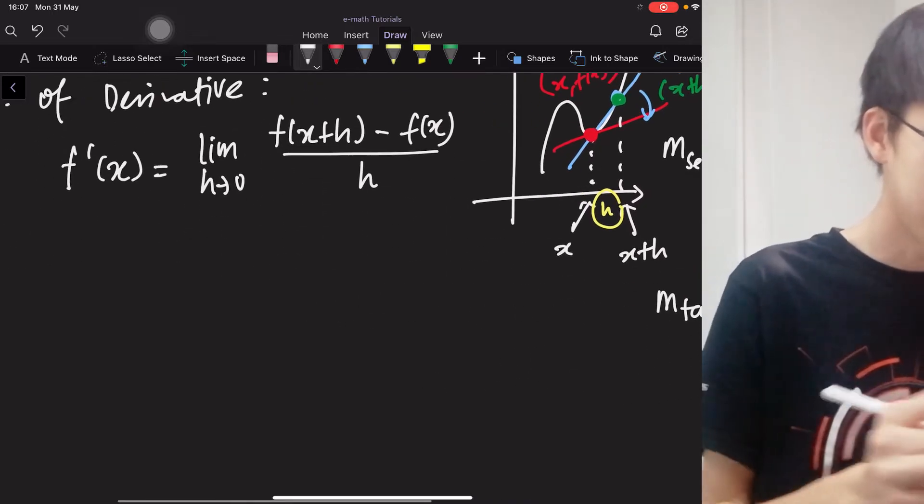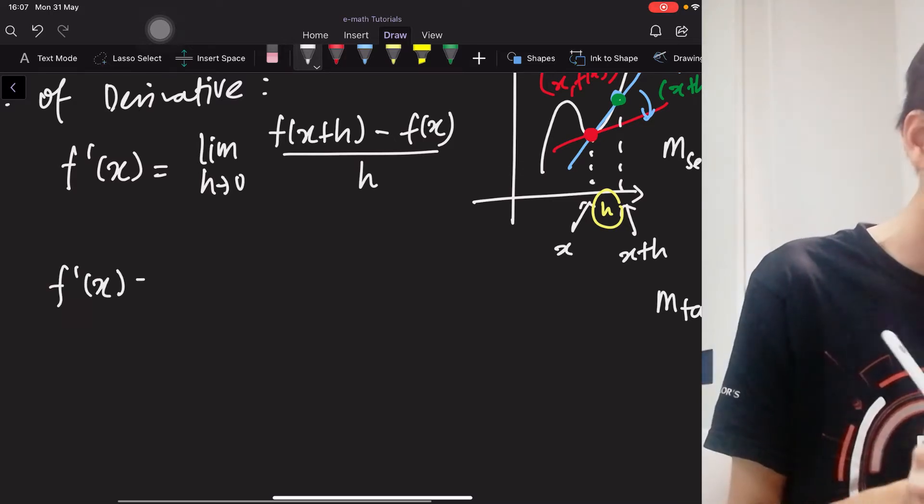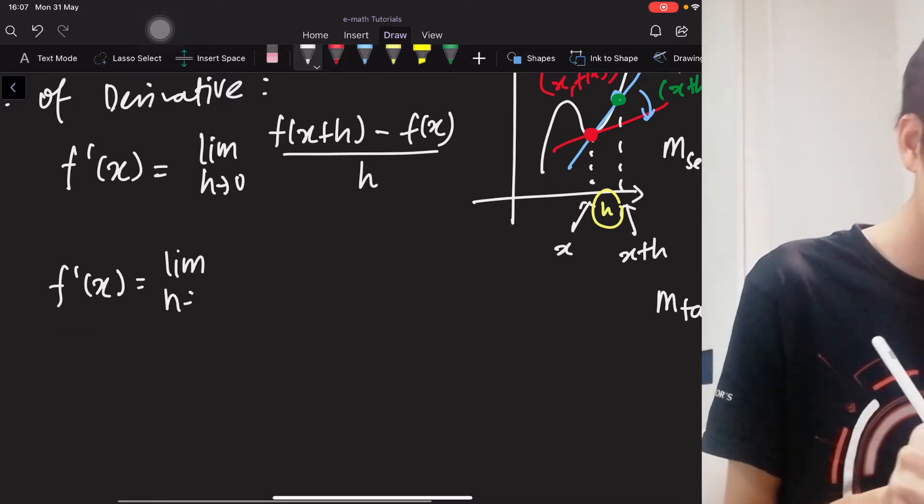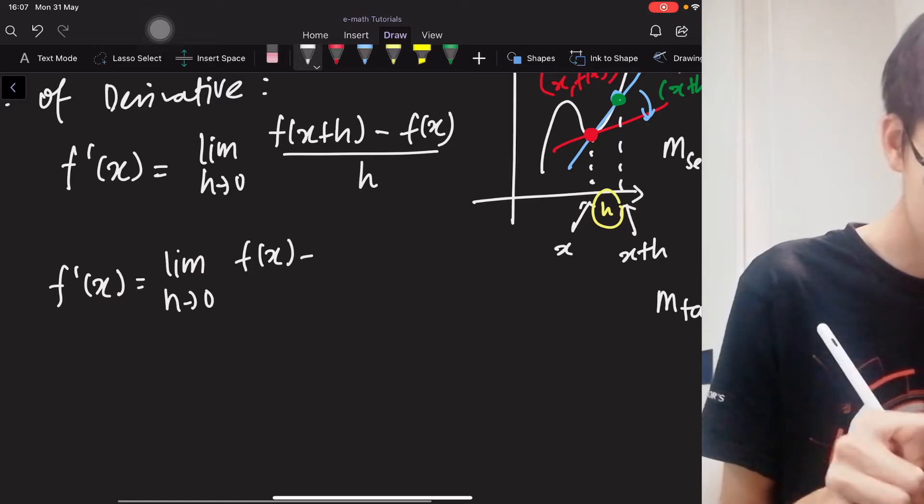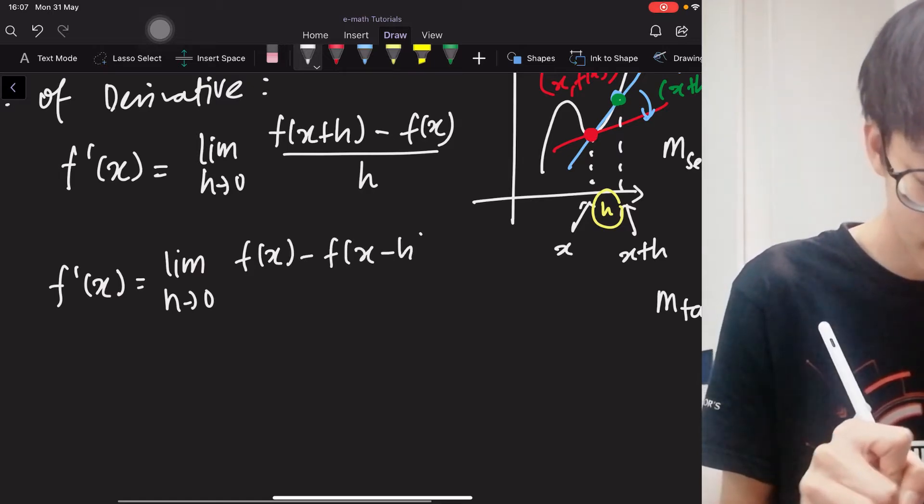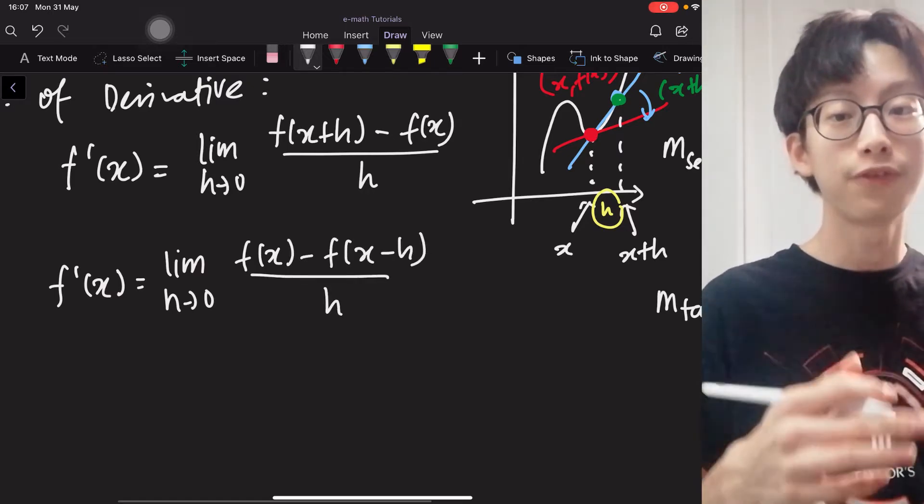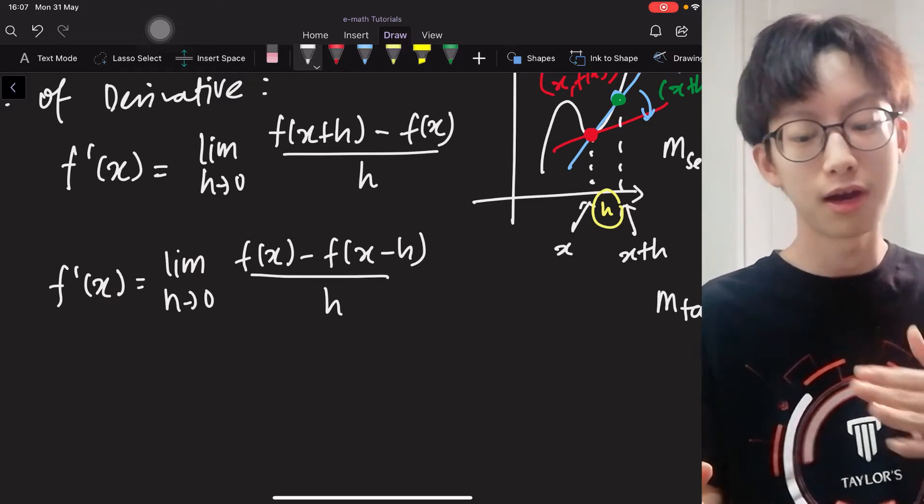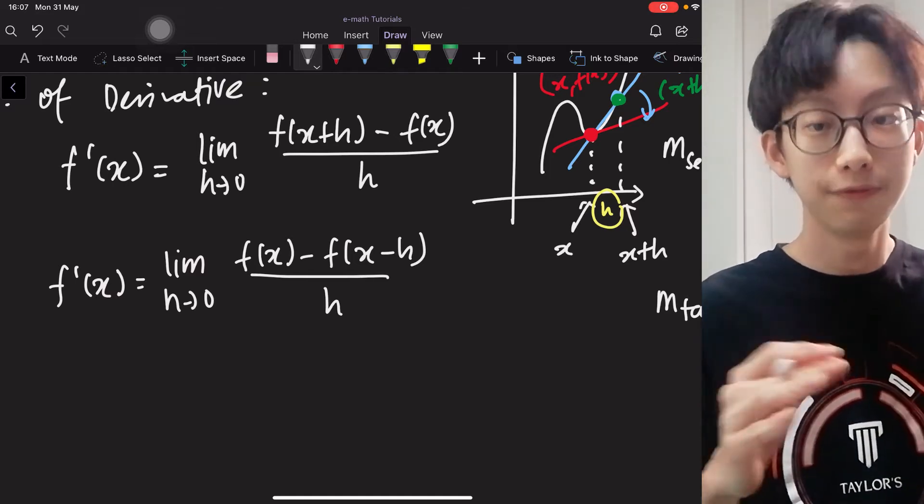So some books may write f'(x) like this, the limit as h approaches 0 of f(x) minus f(x-h) over h. And the two of them basically mean the same thing, just that you are approaching from different sides.